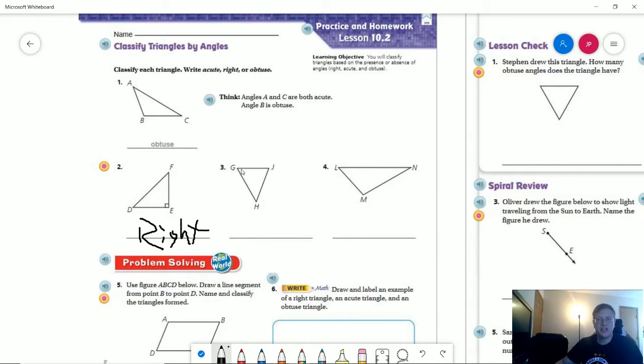The middle one, if we were doing that one, has three angles that are all smaller. That would give us our acute.